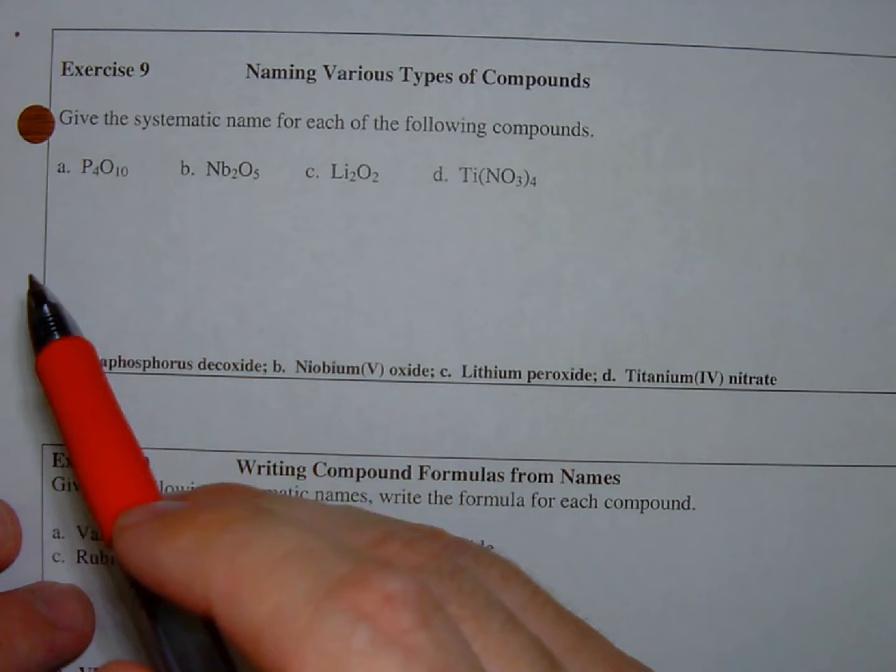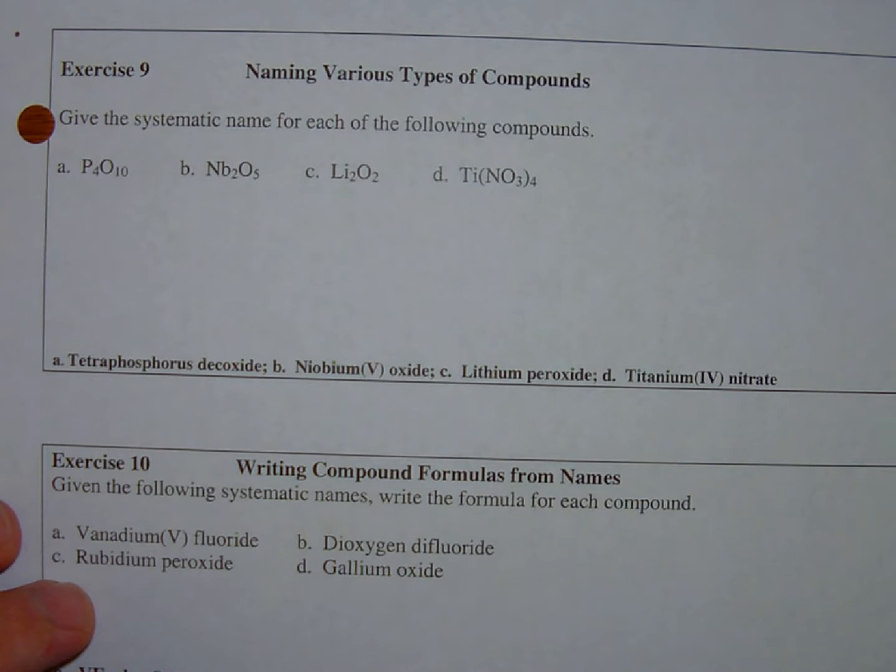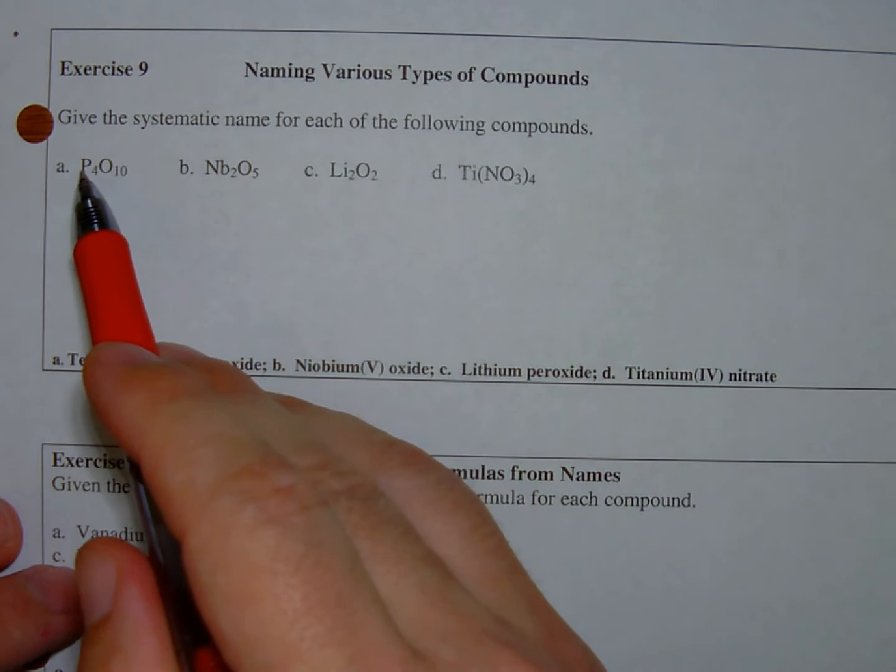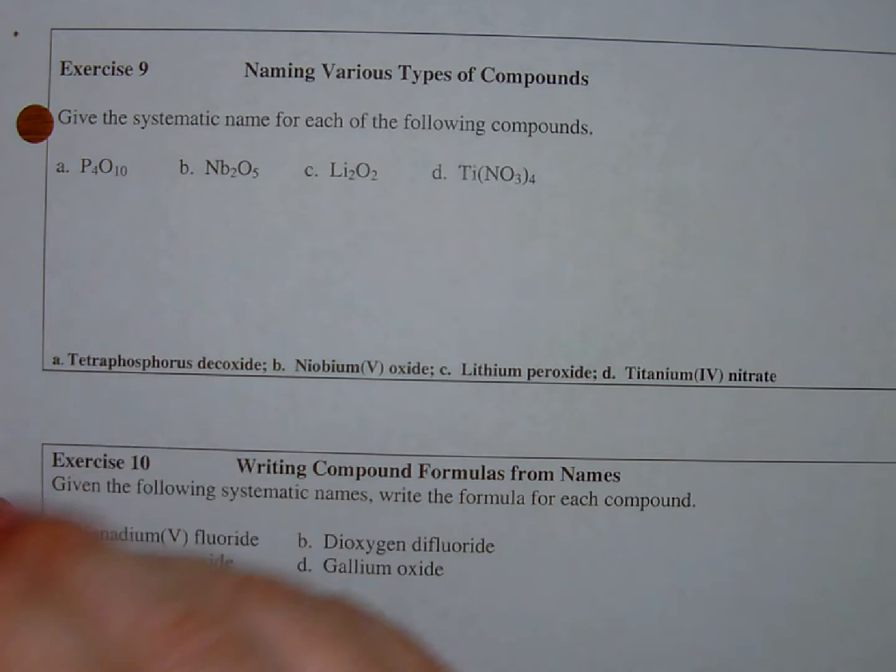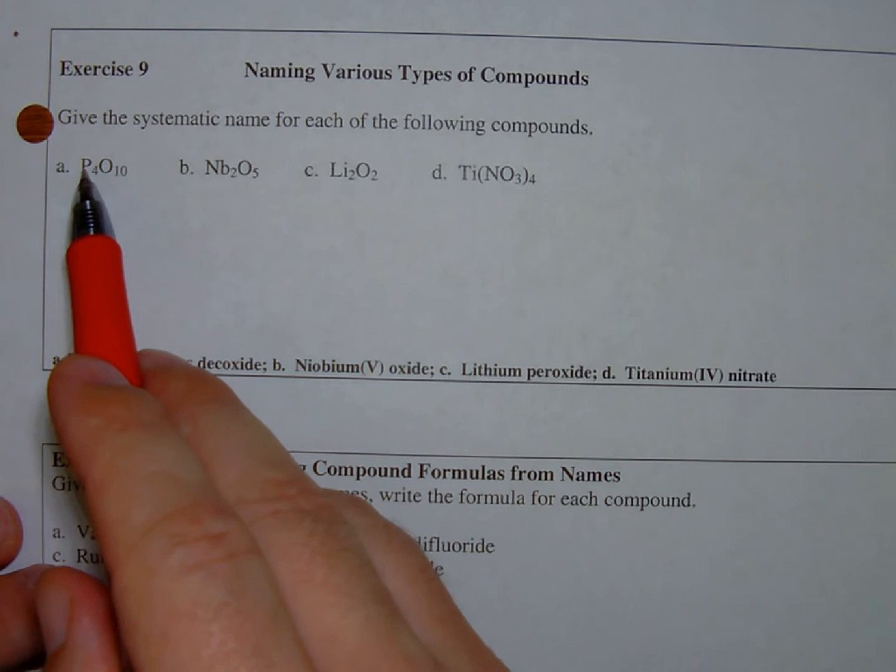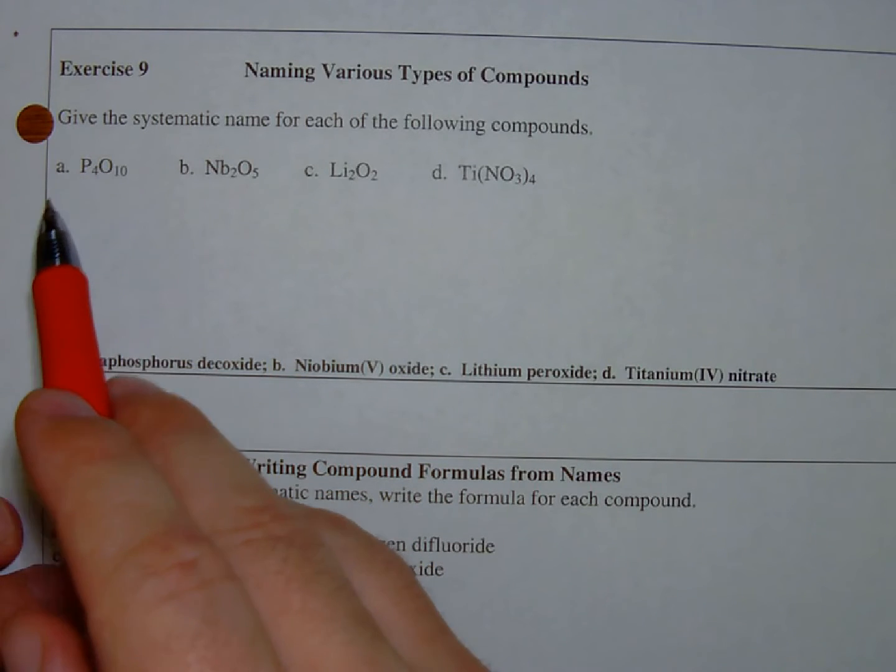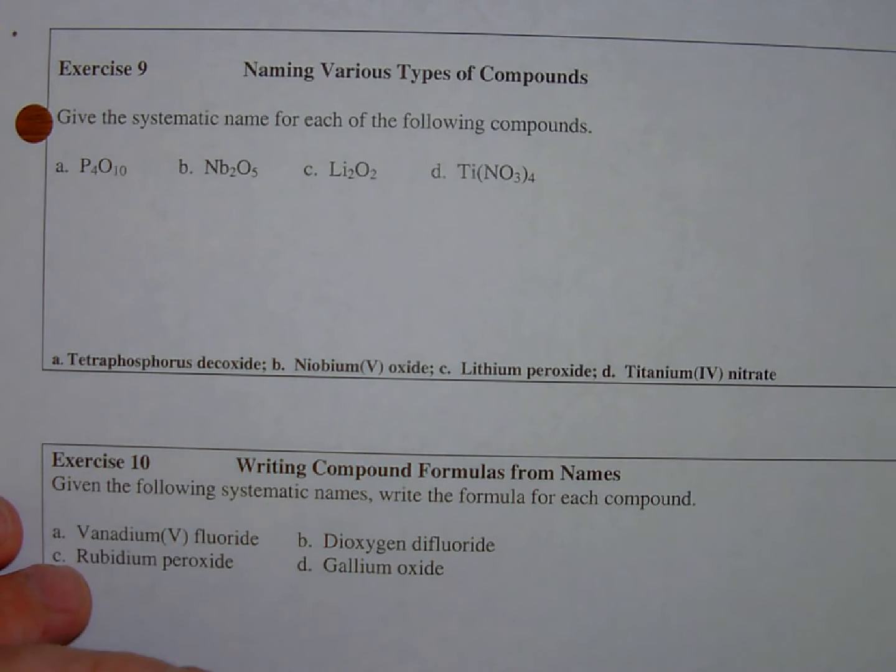Phosphorus, oxygen. They're both non-metals so I'm going to have to use the prefix system. So this is going to be tetraphosphorus decoxide. I have to say the tetraphosphorus because there's a number of phosphoruses aside from one. If there was just one, I'd just say phosphorus decoxide, but there's four of them. So tetraphosphorus decoxide.